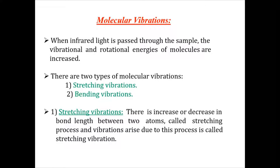There are actually two main types of molecular vibrations that may occur. The first is stretching vibration and the second is bending vibration. In stretching vibration, there is an increase or decrease in the bond length between two atoms — the bonded atoms either come closer to each other or move away, but they remain in the same direction and same line. Only the bond length will change; there is no change in bond angle. This increase or decrease in bond length is called the stretching process, and vibrations arising from this process are called stretching vibrations.